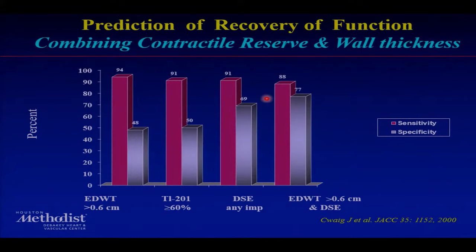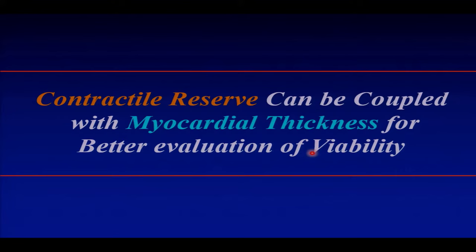You can use both together from the rest image. If you have decent wall thickness combined with dobutamine stress echo, you can improve your sensitivity and specificity without adding anything else — just taking a look at the study and what happens to thickness. Contractile reserve can be coupled with thickness for better evaluation of myocardial viability.